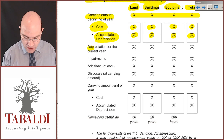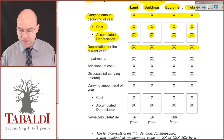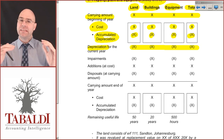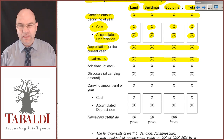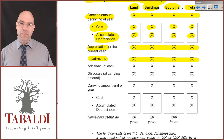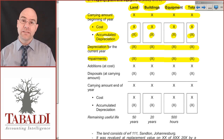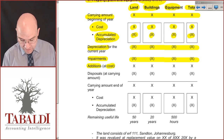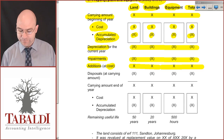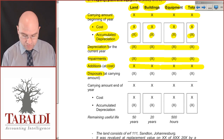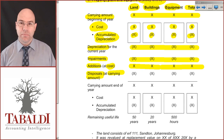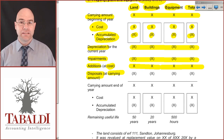Then you're going to work out the depreciation for the current year — that's always a negative, a reduction; remember I put negatives in brackets. Then impairments — that's because some event has happened that's made the asset worth a lot less than its carrying amount, in this year. Then additions: remember it's the cost, not the fair value, that comes in here. You add the additions in the current year. And any disposals — not the selling price, but the actual carrying amount: cost minus accumulated depreciation.